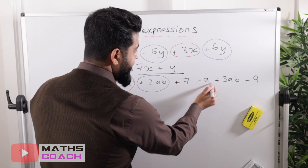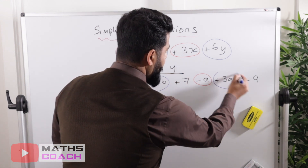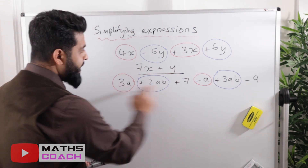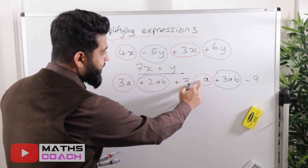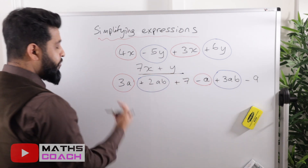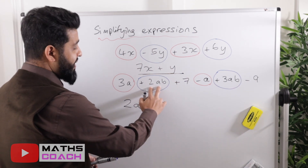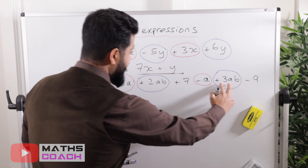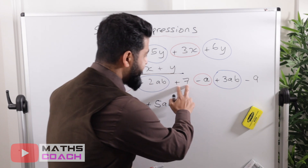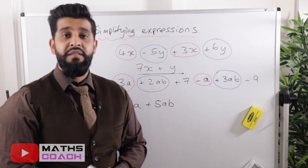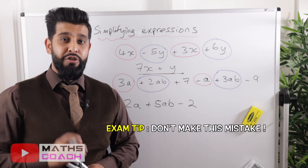Continuing along, we have minus a — included with the a family — and 3ab for the ab family. Now collecting: 3a minus 1a, focusing on the coefficients, gives us 2a. Then 2ab plus 3ab gives us 5ab. Finally, the numbers: 7 minus 9 gives us minus 2. So the simplified expression is 2a plus 5ab minus 2.